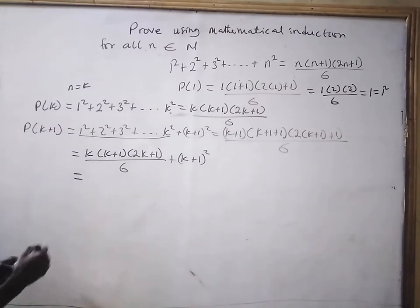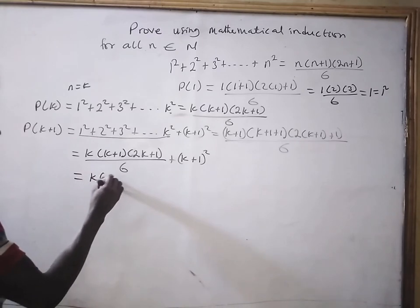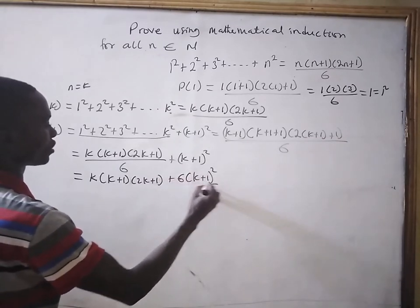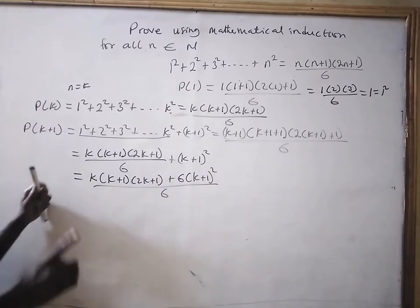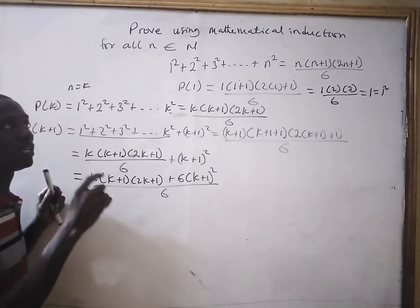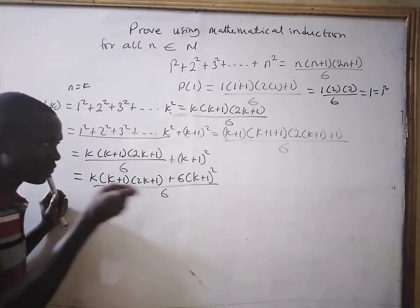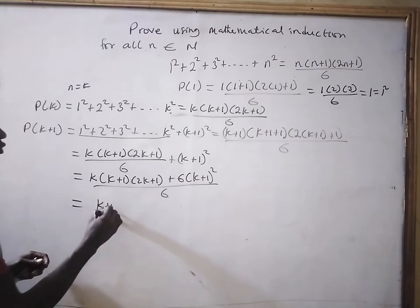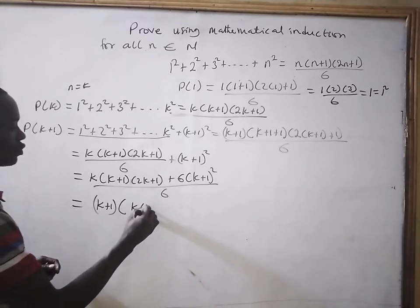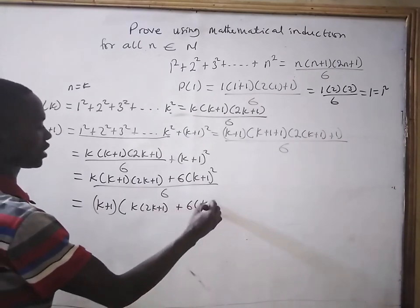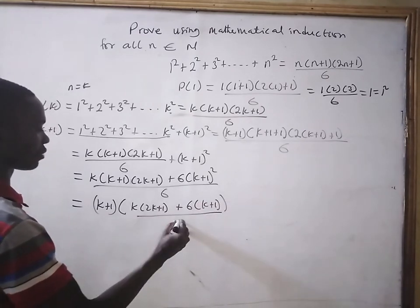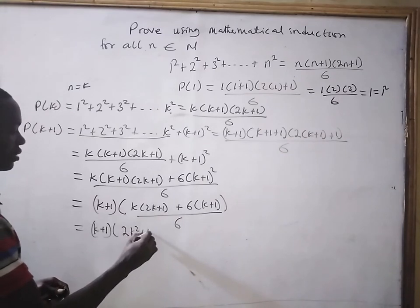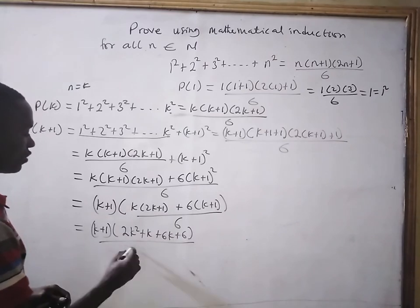So, now let us go. This is equal to k times (k plus 1) times (2k plus 1) plus 6 times (k plus 1) squared, all divided by 6. The most basic thing — and always what you should look for — is to find common factors and factorize them out. Here, (k plus 1) appears in both terms, so we have (k plus 1) times [k times (2k plus 1) plus 6 times (k plus 1)] all divided by 6. This equals (k plus 1) times (2k squared plus k plus 6k plus 6) all divided by 6.